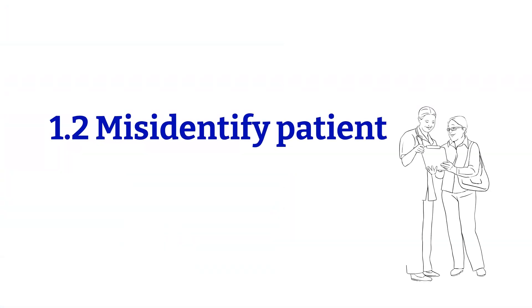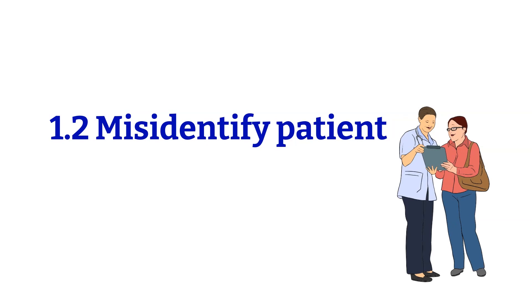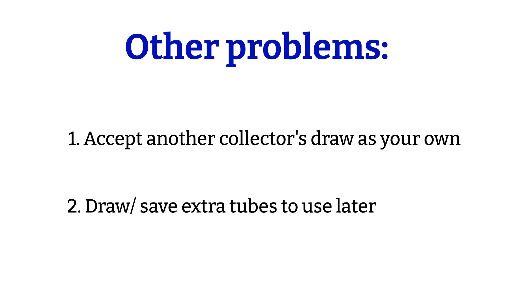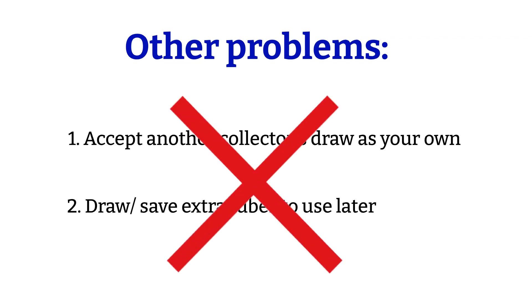Next, misidentified patients could be another reason why the current blood type and the historical blood type do not match. There is a right way and a wrong way to practice patient identification. As a healthcare professional, it is important to practice the correct way and not entertain the wrong way. A patient could die within a minute of getting a transfusion with an incompatible blood type. Keep that in mind. Other pre-analytical problems include accepting another collector's draw and labeling it as your own, or drawing and saving extra tubes for later use. These actions are unacceptable.